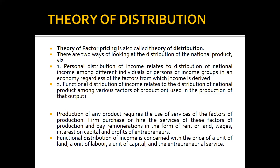Let's continue with the theory of distribution, which we can also call the theory of factor pricing. We call it factor pricing because in the production process four factors are required: land, labor, capital, and entrepreneur. Land receives rent, capital receives interest, labor receives wages, and the entrepreneur receives profit.